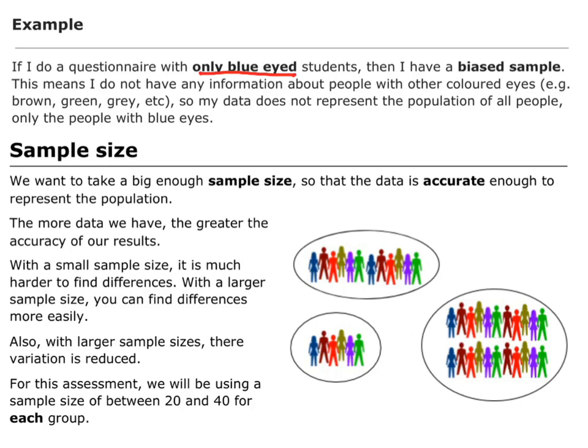The other idea connected to this is sample size. We want to get a big enough sample size — if I only collect data from two or three people, I don't have very much information. It doesn't take long to collect, but it doesn't give me a lot to base decisions on. The more data I have, the more accuracy and knowledge I have about the group I'm interested in. A larger sample size takes longer to collect, but gives me a lot more information about more people and objects, so I have a better picture of what's going on.